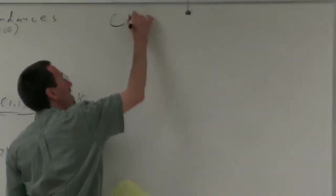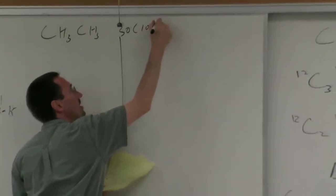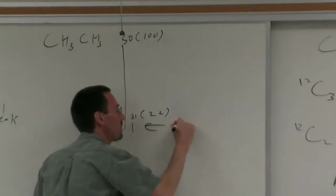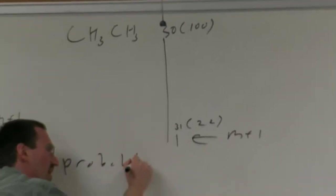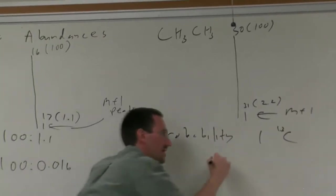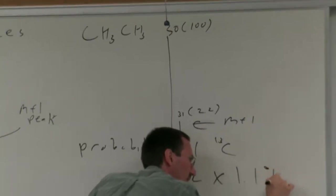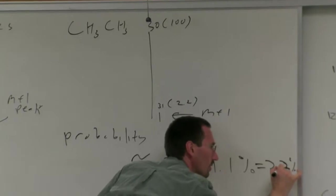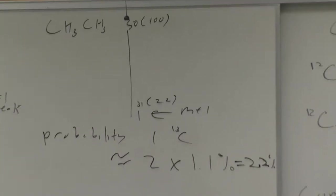If you had a molecule with 100 carbons in it, now your M plus 1 peak would be just about as big or maybe even a little bigger than your M peak. Let's by comparison look at ethane CH3CH3. Now you see a peak at 30 with relative intensity of 100 and a peak at 31 with relative intensity of 2.2.